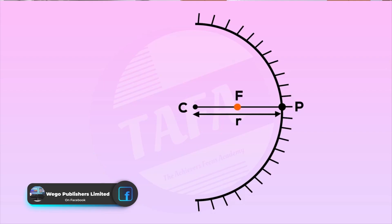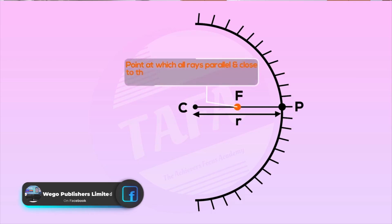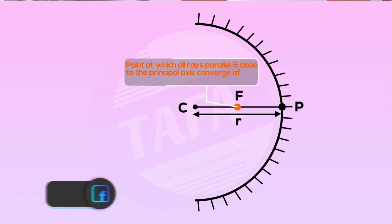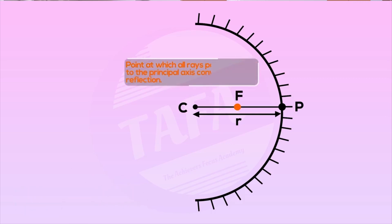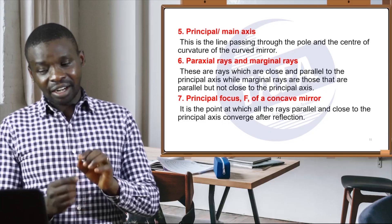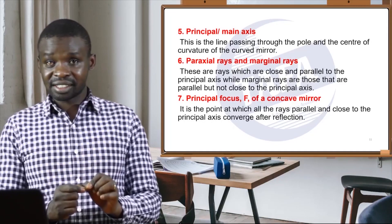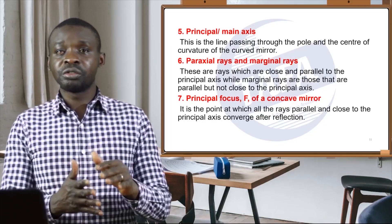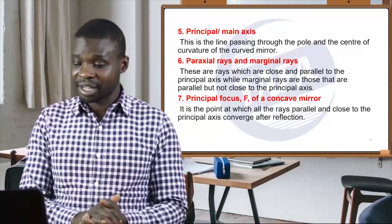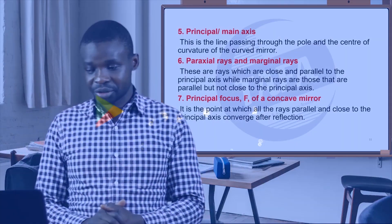To repeat: the principal focus is the point at which all rays parallel and close to the principal axis converge after reflection.